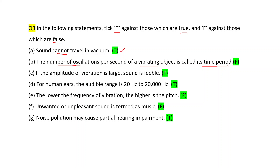The number of oscillations per second of a vibrating object is called its frequency, not time period — so F. Third: if the amplitude of vibration is large, sound is feeble — this is a wrong statement. If the amplitude of vibration is large, sound is loud — so F. Fourth: for human ears, the audible range is 20 Hz to 20,000 Hz — this is a correct statement, so T.